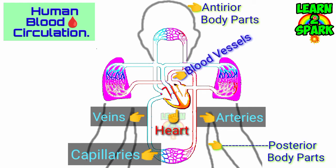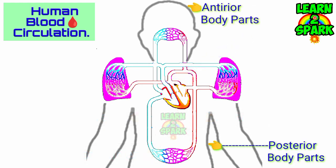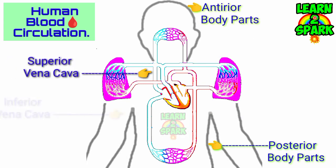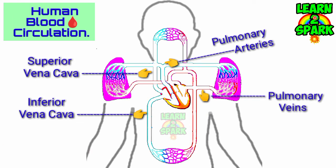There are mainly 5 blood vessels, which includes the superior vena cava, inferior vena cava, pulmonary arteries, pulmonary veins, and the aorta.